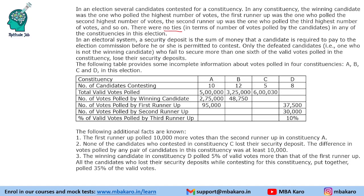In an electoral system, a security deposit is the sum of money that a candidate is required to pay to the election commission before being permitted to contest. Only the defeated candidates — those who failed to secure more than one-sixth of the valid votes polled in the constituency — lose their security deposit. So if a candidate is not able to secure one-sixth of the votes, they are considered as losing the security deposit.